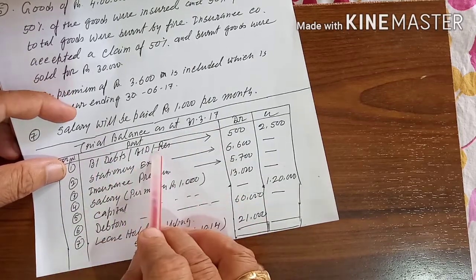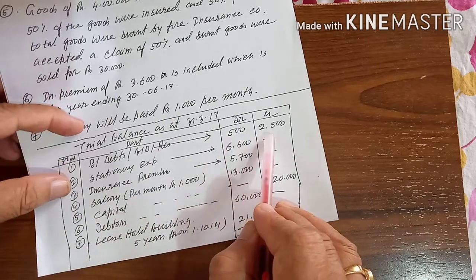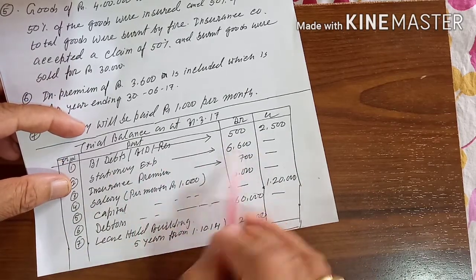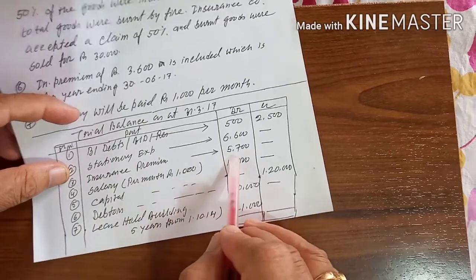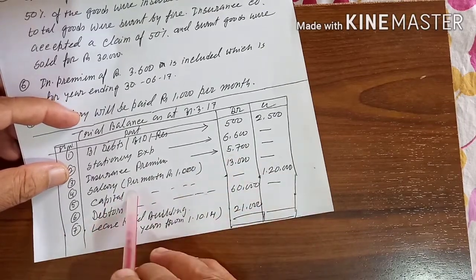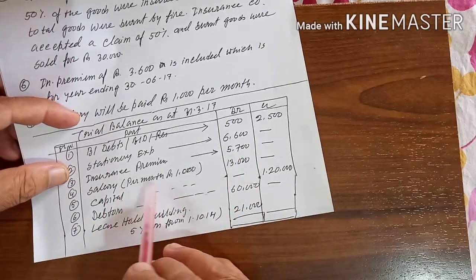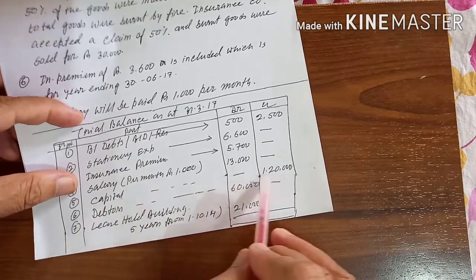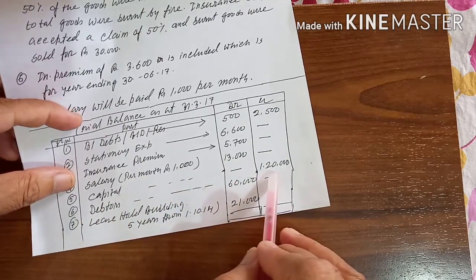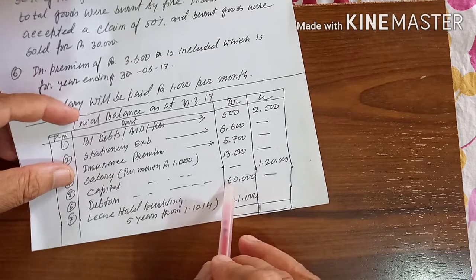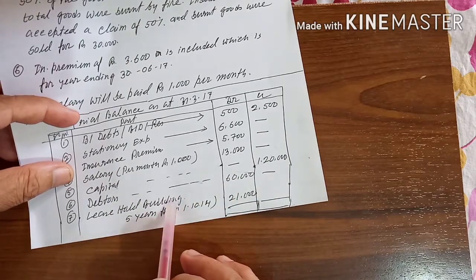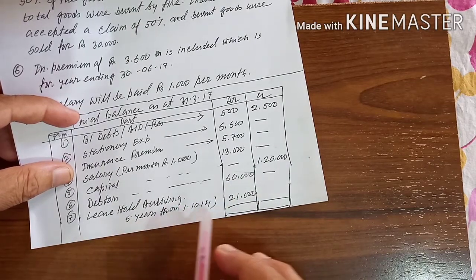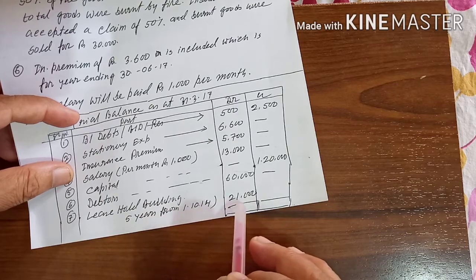Bad debt and bad debt reserve: 500 and 2,500. Stationery expense: 6,600. Insurance premium: 5,700. Salary — in bracket, per month rupees 1,000 — total 13,000. Capital: 1,20,000. Debtors: 60,000. Leasehold building — in bracket, 5 years from 1/10/14 — 21,000.